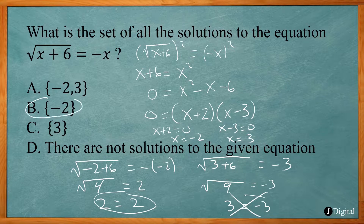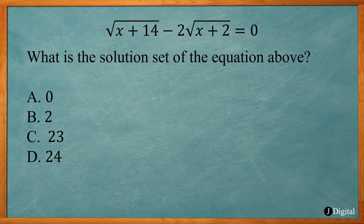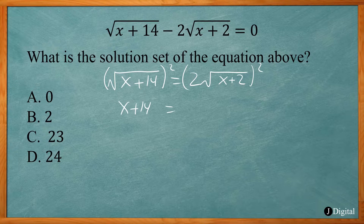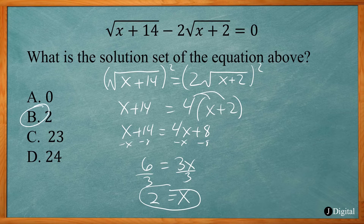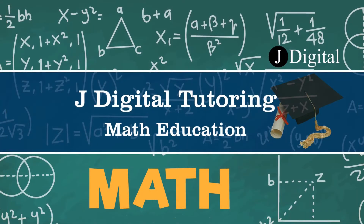In this SAT problem, we have the square root of x minus 2 equals 4. Which of the following is the solution to the equation? We get the radical by itself by adding 2 to both sides, giving us the square root of x equals 6. Then we square both sides to get x equals 36. So answer choice C.